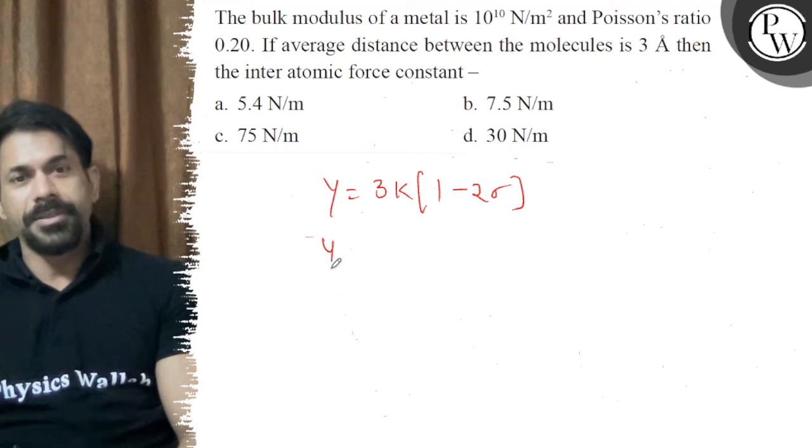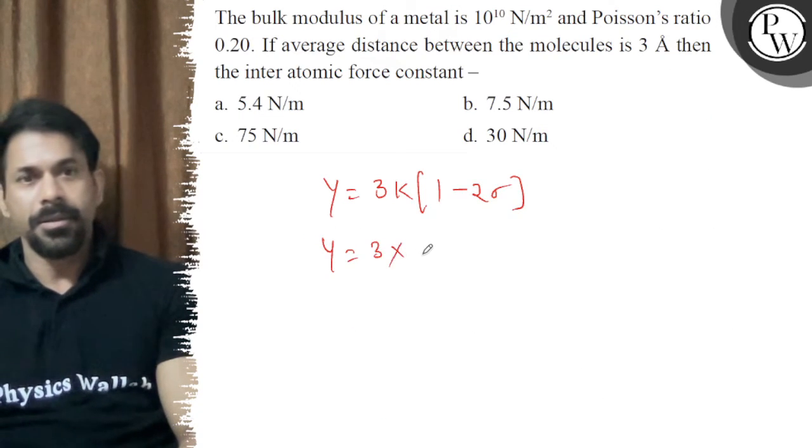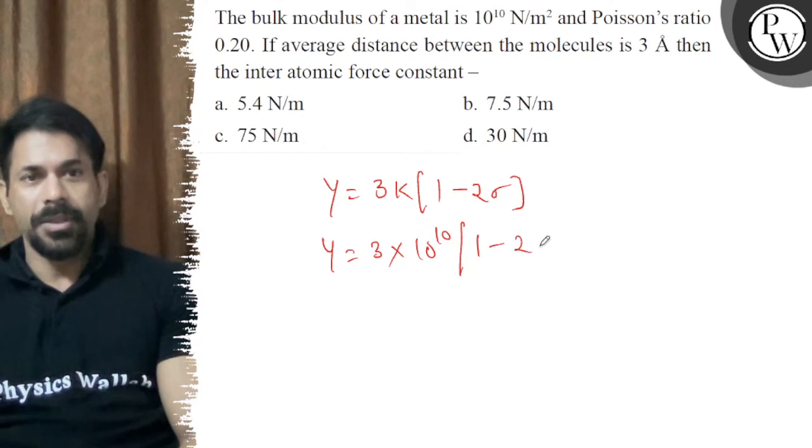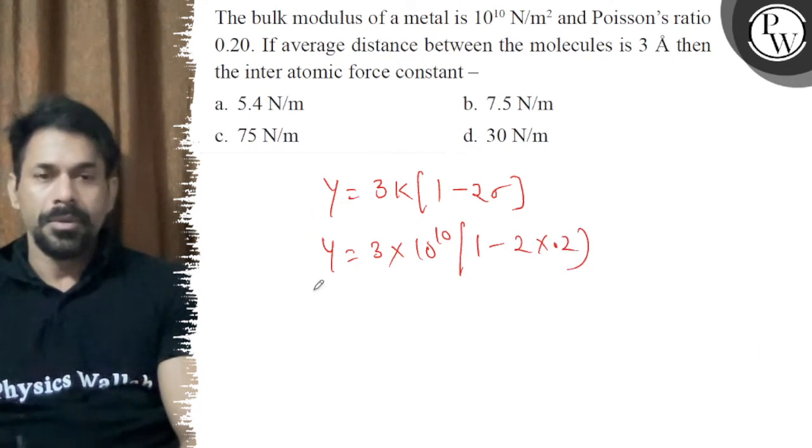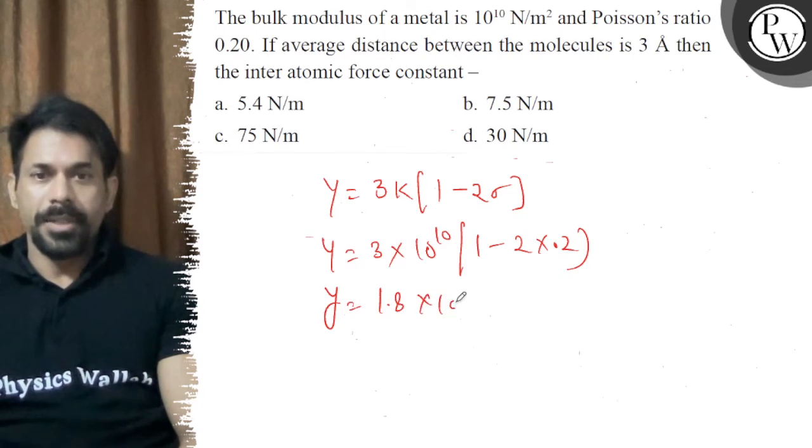So Y is equal to K times 10 power 10 times (1 minus 2 times sigma, which is 0.2). Therefore Y equals 1.8 into 10 power 10.